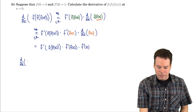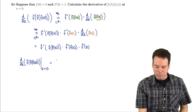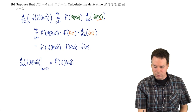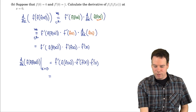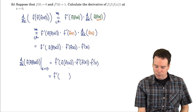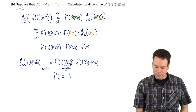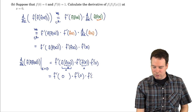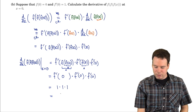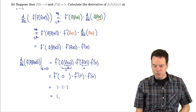Now we're interested in the case when x is zero. Substituting zero everywhere: f'(f(f(0))) times f'(f(0)) times f'(0). Using the given information — f(0) = 0 and f'(0) = 1 — we get: f(0) = 0, then f of that is also 0, so we're looking at f'(0) times f'(f(0)), which equals f'(0) times f'(0) times f'(0). That gives us 1 times 1 times 1, which equals 1. So the derivative of f composed with itself three times, at x = 0, is 1.